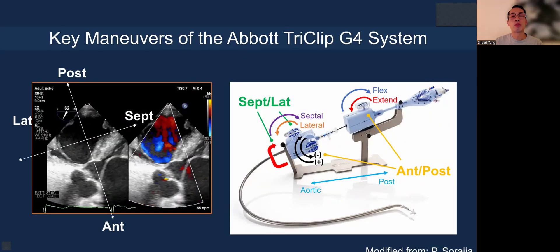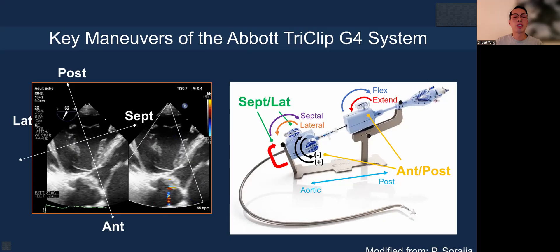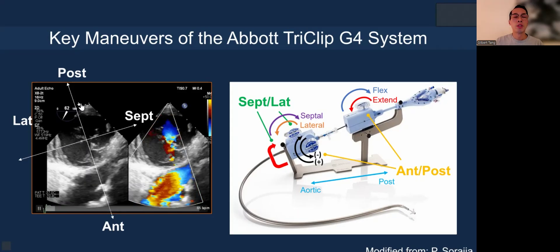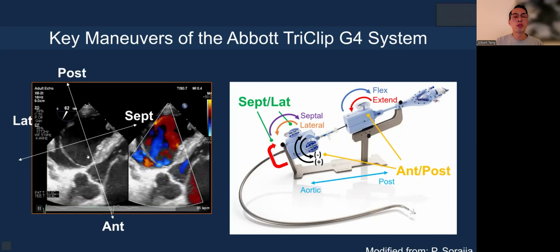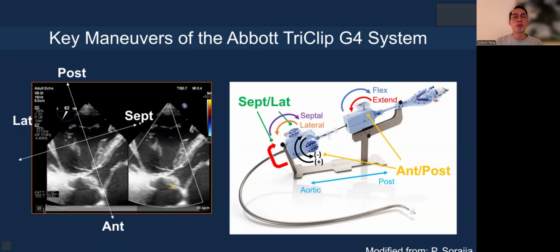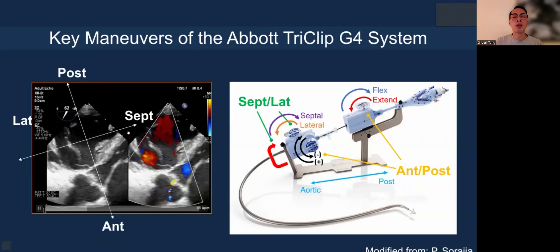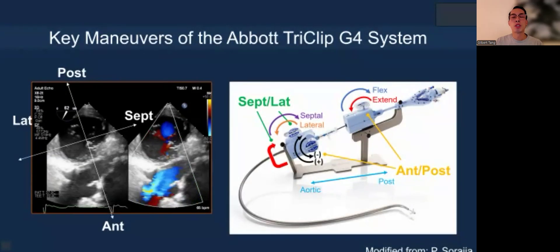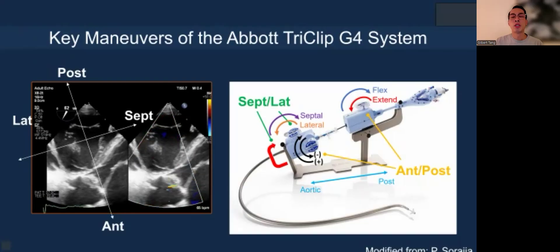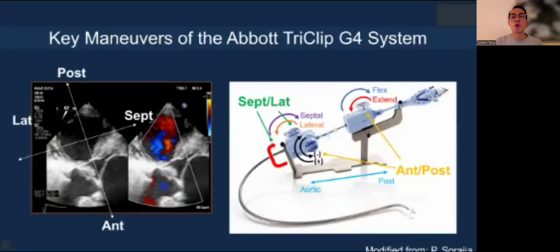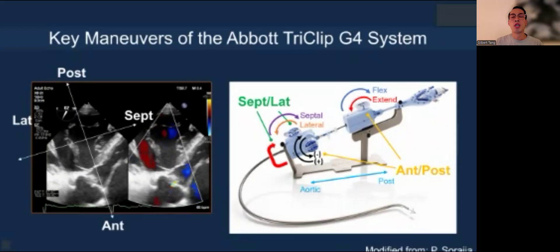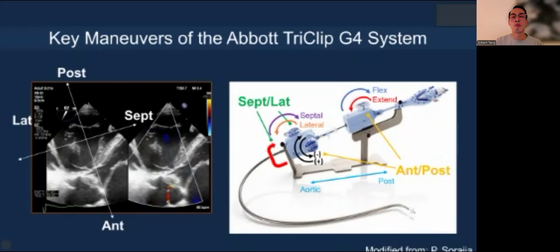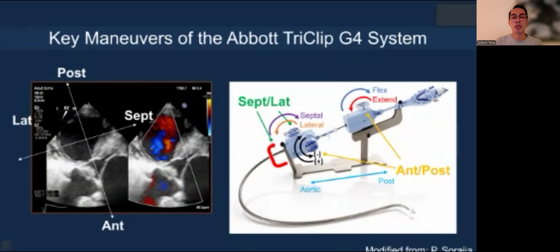In terms of the TriClip G4 system for T-tier, the device maneuver is a bit different from mitral. The anterior-posterior is based on the transgastric view, and the septolateral is exactly perpendicular. The knob has changed from the CDS to the SCG, giving the guide more maneuverability in terms of avoiding septal hugging and more steerability.